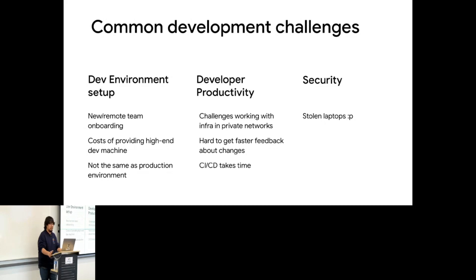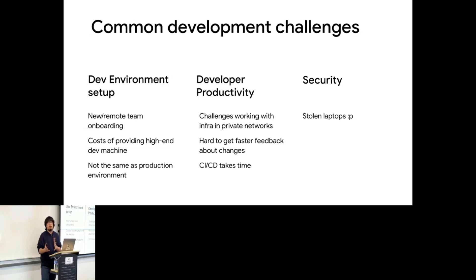The second problem is the cost of providing high-end machines. Running many microservices locally requires more compute power, so companies end up spending three to four thousand dollars per machine. The ROI is very low if an engineer leaves within a year. Even with a high-end machine, it's still just one computer — you can't run your application in a distributed manner. When you push code, the CI/CD pipeline takes time: a Go app might take under 10 minutes, but complex projects can take over 20 minutes.